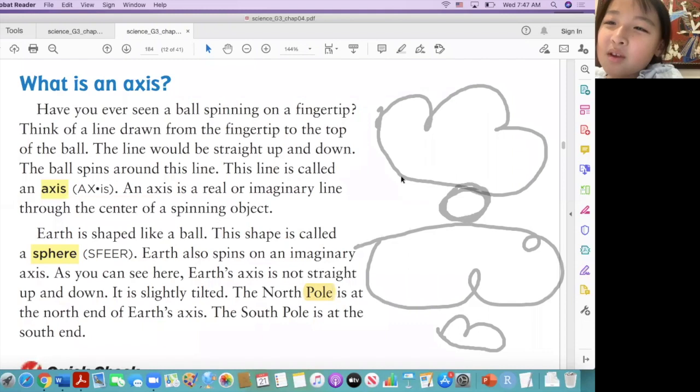An axis is a real imagination line through the center of spinning objects. Earth is shaped like a ball. This sharp shape is called a sphere. Sphere. Earth also spins on imaginary axis. As you can see here, Earth's axis is not straight up and down. It's slightly tight. The north pole is at the north end of the sixth axis. The south pole is at the south pole. Okay, good.